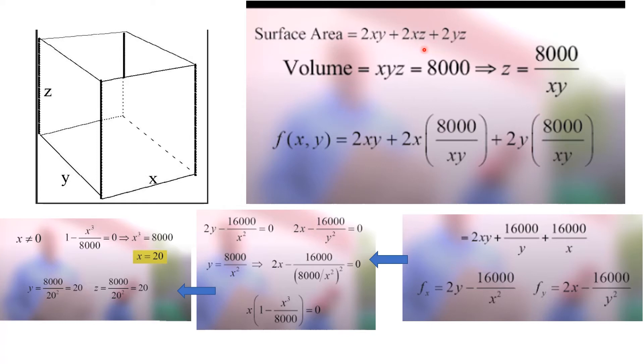This is my f of x, y. And you might say, well, yes, but it has x, y, and z in it. But I'm going to use this to make this into an equation of two variables. So, f of x, y is going to be 2xy was fine. This was 2xz. But I'm going to substitute this in. And this was 2yz. And I'm going to substitute this in again for z. And I am able to then simplify. The x's will cancel here and the y's will cancel here. So, this simplifies to f of x, y equals 2xy plus 16,000 over y plus 16,000 over x.